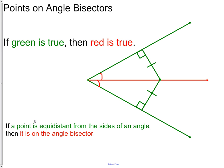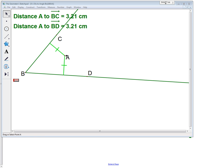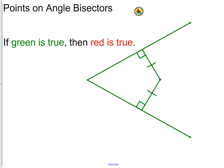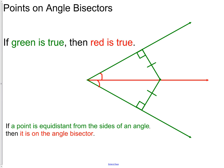Now we can do the converse: if a point is equidistant from the sides of an angle, then it is on the angle bisector. The last statement said if it's on the angle bisector then it is equidistant from the sides; now we're saying if it is equidistant from the sides then it is on the bisector. If I move point A, notice how that distance always stays exactly the same. The reason is that A is on the angle bisector. So: if a point is equidistant from the sides of an angle, then it is on the angle bisector.